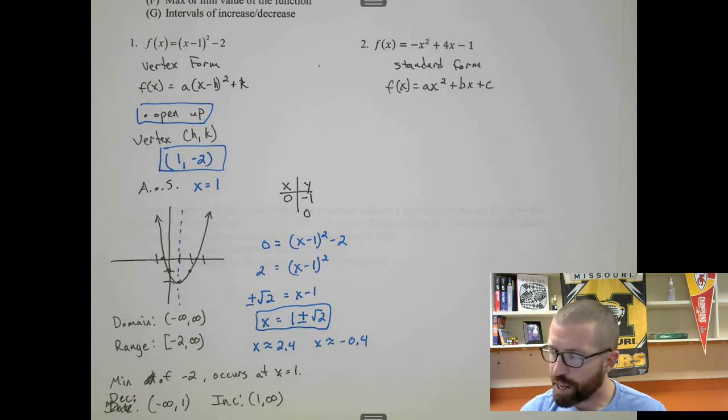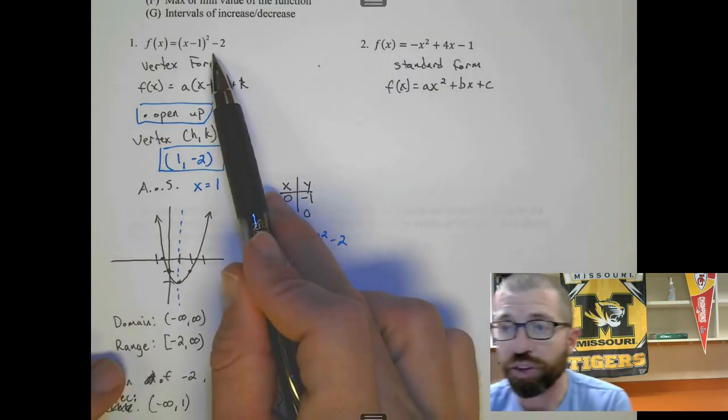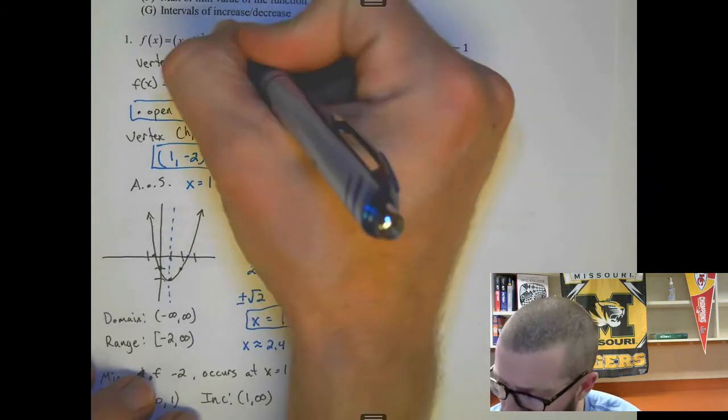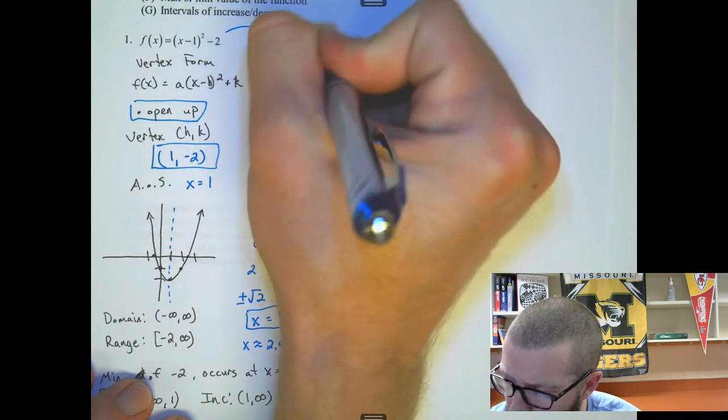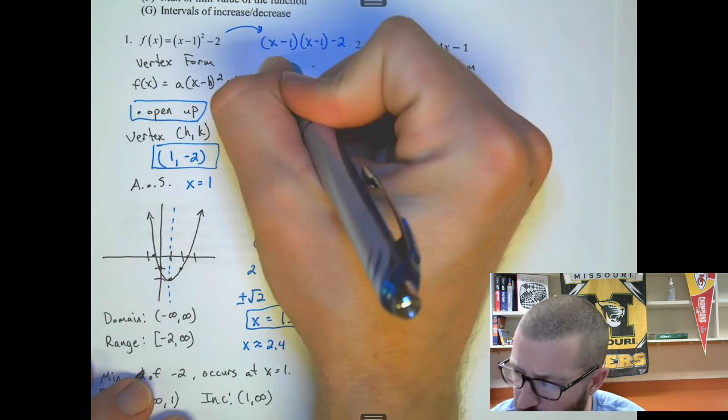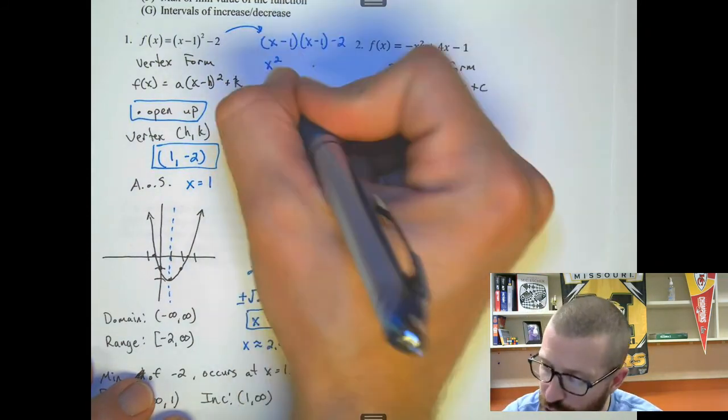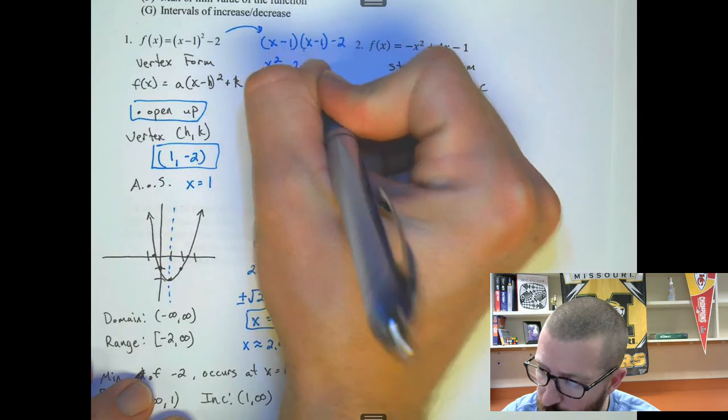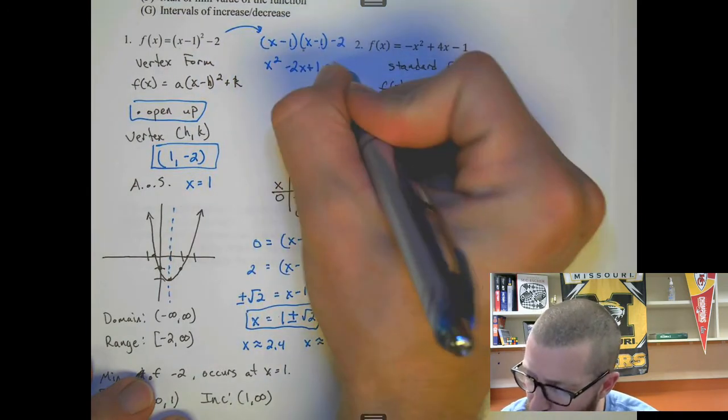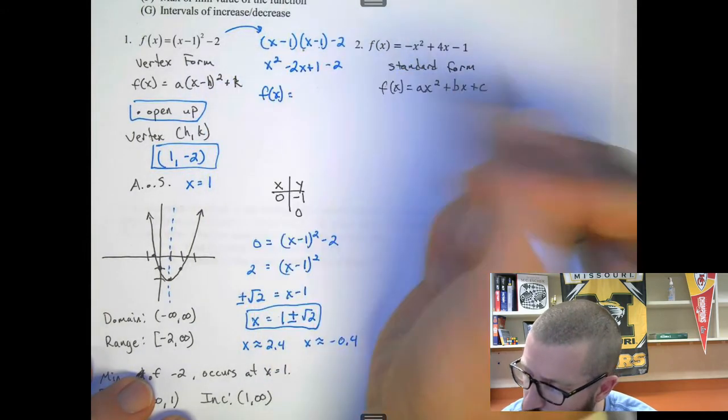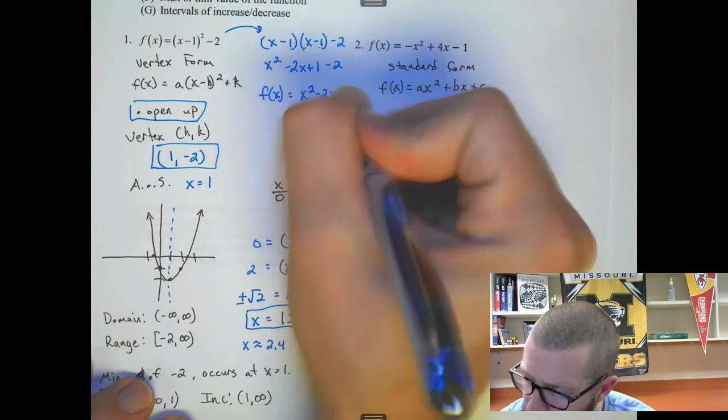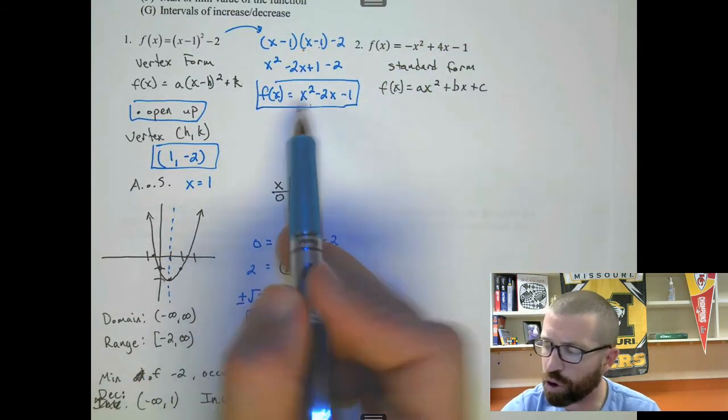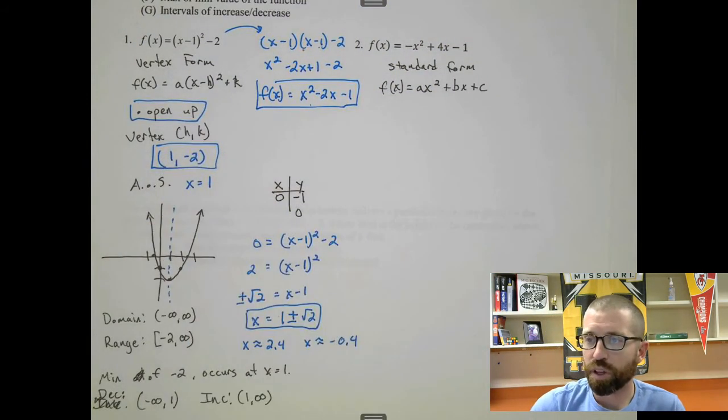And then let's write it in the other form. So to write this in standard form, to get it to look like this, you foil this out. So we make this (x - 1)(x - 1) and then minus 2. So we get x² - x - x is -2x plus 1. 1 times 1 is positive 1 and then minus 2. And so f(x) = x² - 2x - 1. So this is the standard form. This is the vertex form.